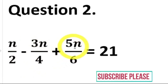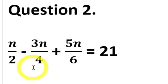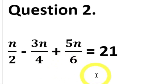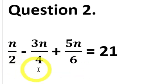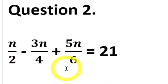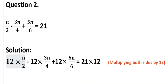Question number 2: n/2 minus 3n/4 plus 5n/6 is equal to 21. इसमें भी हम 2, 4, और 6 का LCM लेंगे। छोटी संख्याओं का LCM मौखिक ज्ञात कर सकते हैं — सबसे बड़ी संख्या का table पढ़ें और वहाँ रुकें जहाँ छोटी संख्याओं का table भी आ जाए। जैसे 6 के table में 6 आता है, 2 के table में 6 आता है, लेकिन 4 के table में 6 नहीं आता। तो LCM 12 होगा, और हम पूरे समीकरण को 12 से multiply करेंगे।